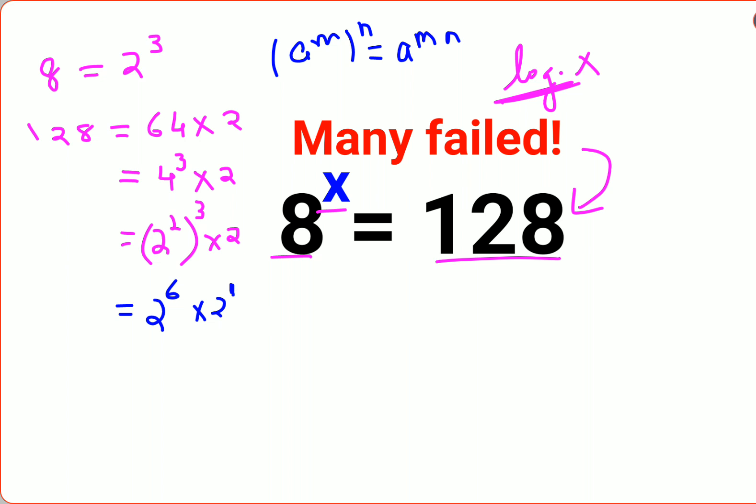So in the index for 2 is 1 over here, and if the bases are same and there are different indices, in case of a product the indices get added. So this becomes 2 raised to 7. So now you saw how easily the question changed to 2 raised to 3x equals 2 raised to 7.